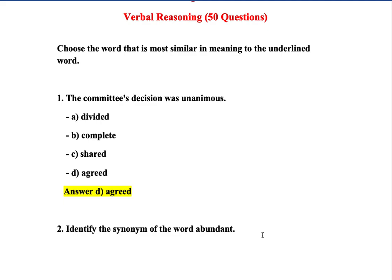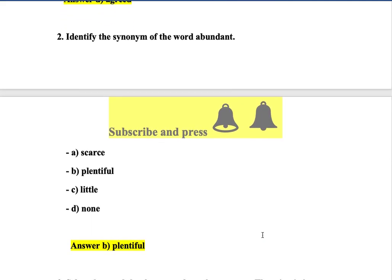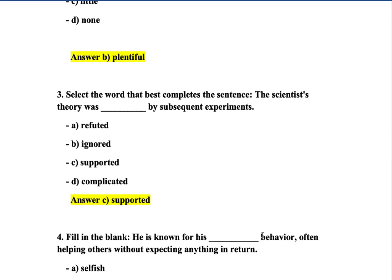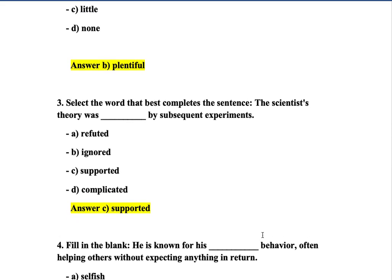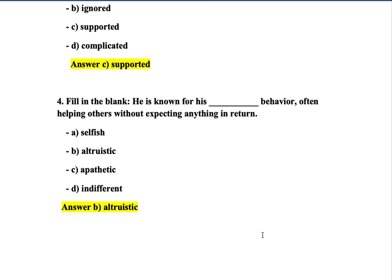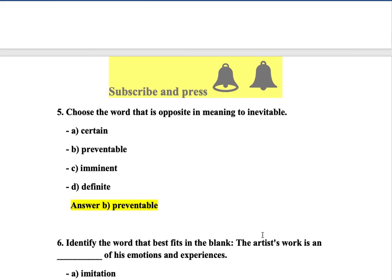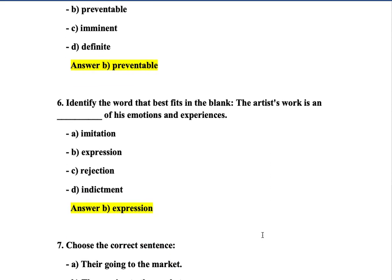Question 1: The committee's decision was unanimous — option D is correct. Question 2: Identify the synonym of 'abundant' — 'plentiful' — option B is correct. Question 3: Select the word that best completes the sentence: 'The scientist's theory was supported by subsequent experiment' — option C. Question 4: He is known for his altruistic behavior — option B. Question 5: Choose the word opposite in meaning to 'inevitable' — option B is correct.